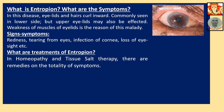What is entropion? In this disease the eyelids and hairs curl inward, commonly seen on the lower side. Weakness of the muscles of the eyelids is the reason. Signs and symptoms include redness, tearing from the eye, infection of the cornea, and loss of eyesight. In homeopathy and traditional therapy, there are remedies based on the totality of symptoms.